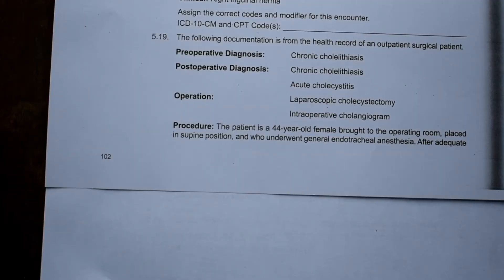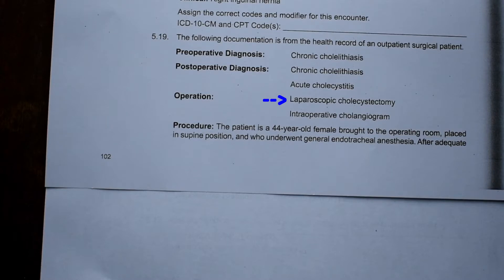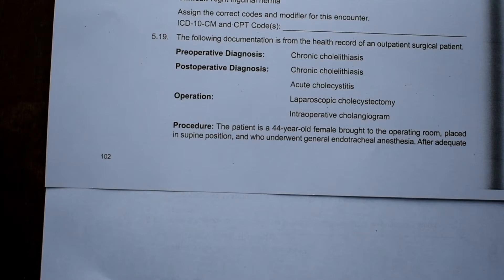Our op report is mainly on the second page, but the first part is really good because it shows us the operation and the diagnosis, so we get an idea of the body part or body region that we are working on. The operation is laparoscopic cholecystectomy and intraoperative cholangiogram. So we know we're going to be talking about the bile duct, gallbladder — that area of the body. We are in the digestive system.